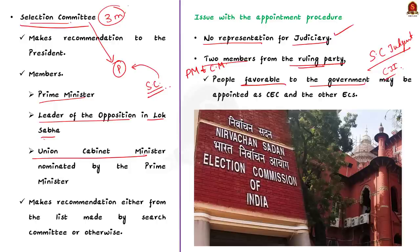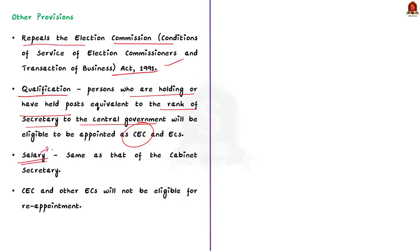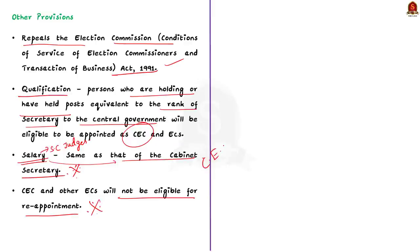The bill also proposes other changes. Firstly, it repeals the Election Commission Act 1991. Secondly, it adds a provision regarding the qualification of the CEC and other election commissioners — persons holding or having held posts equivalent to the rank of Secretary to the Central Government will be eligible. Thirdly, the bill changes provisions regarding salary allowances: earlier, the salary of election commissioners was equal to that of a Supreme Court Judge, but the bill provides that it will be the same as that of a Cabinet Secretary. Lastly, the bill says that election commissioners will not be eligible for reappointment.